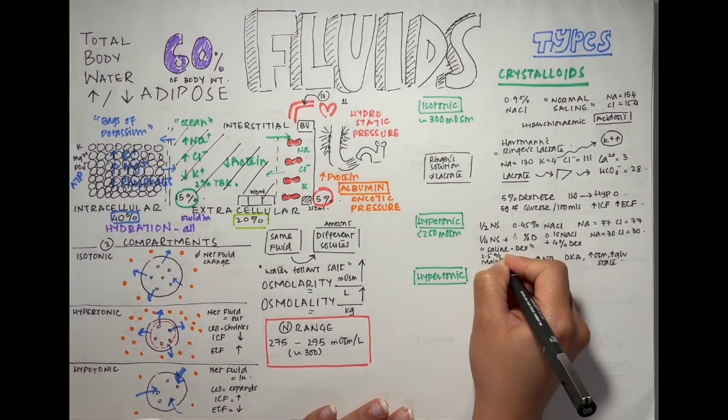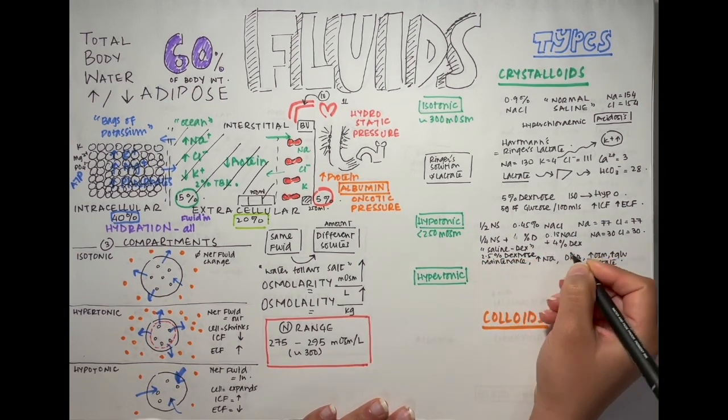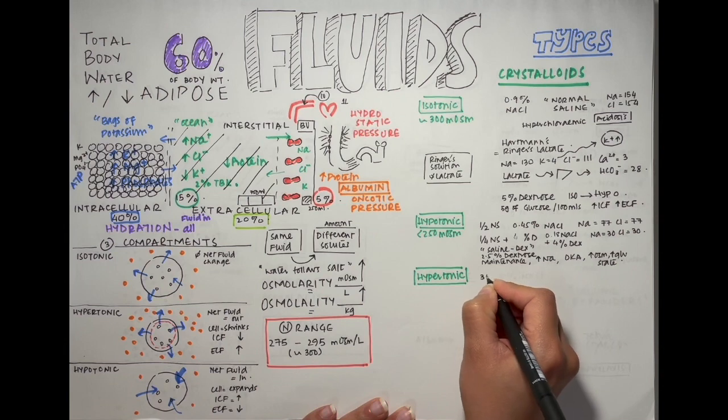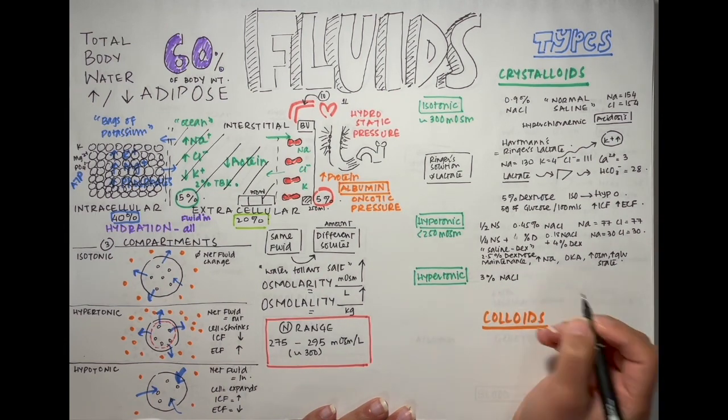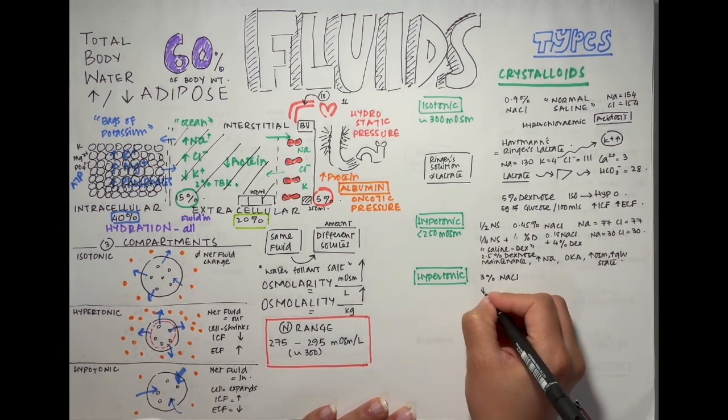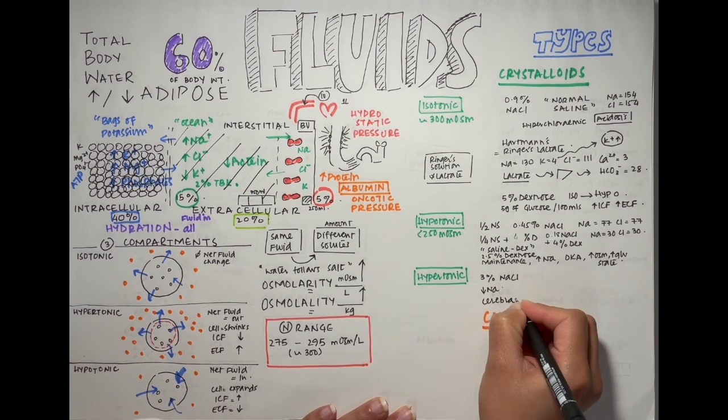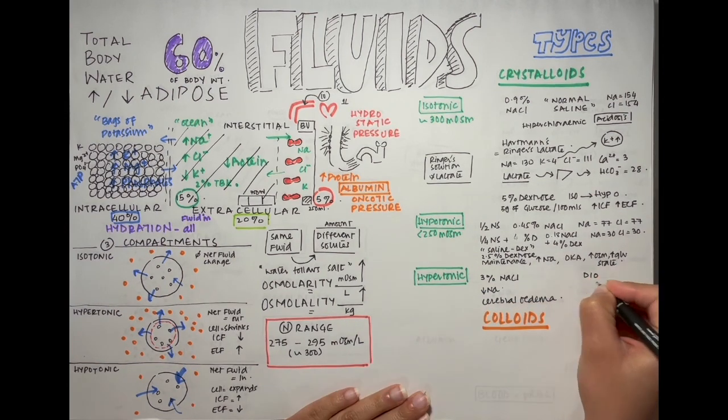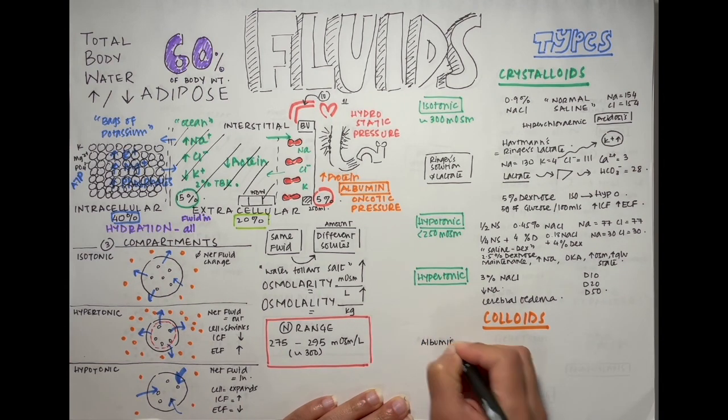As well as hyperosmolar hyperglycemic states. So it contains 30 millimoles of sodium and chloride and whatever glucose you get from the 4% dextrose. Next up we have hypertonic solutions such as 3% NaCl. These are used in hyponatremia and cerebral edema to draw water out. There's D10, D20, and D50 as well.